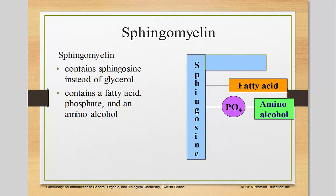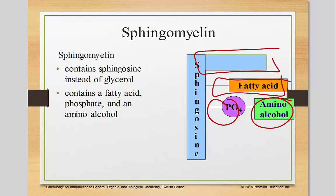Sphingomyelin contains sphingosine instead of glycerol. It contains a fatty acid, a phosphate, and an amino alcohol. And up here, we have just a carbon chain.